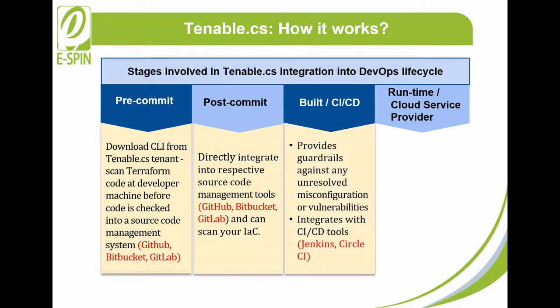At the build stage or CI/CD, Tenable CS provides guardrails against any unresolved misconfigurations or vulnerabilities that are yet to be pushed into your runtime environment. Tenable CS integrates with CI/CD tools such as Jenkins or CircleCI to monitor builds and prevent misconfigurations from going into runtime by stopping the build or deployment.